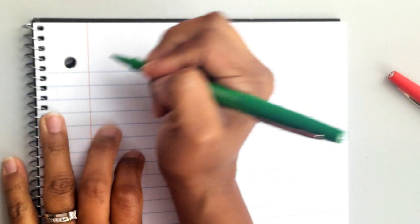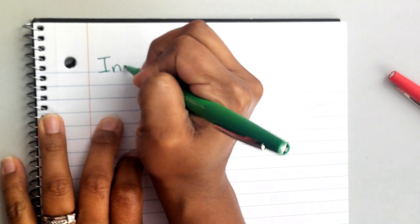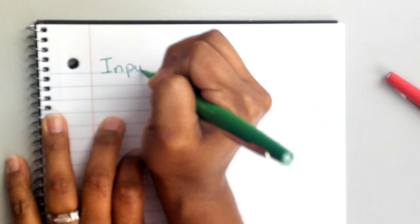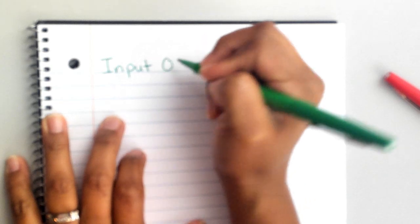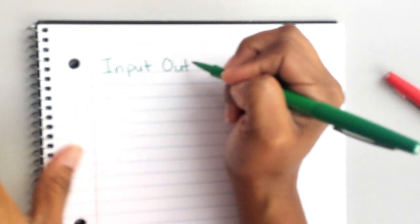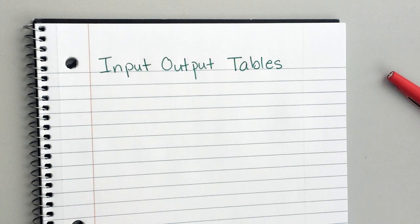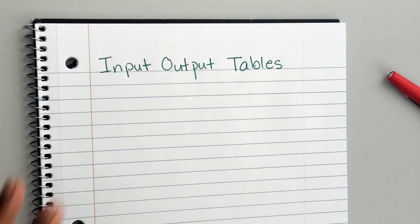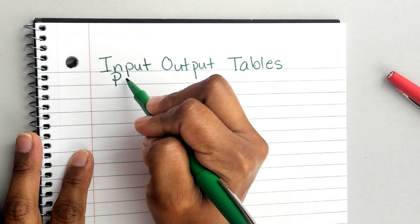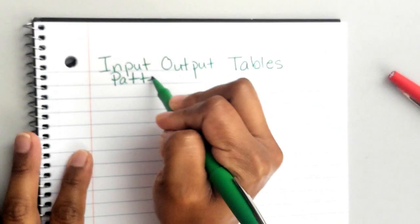Number pairs are also called input output tables. Pause if you need to fast forward or rewind — this is at your own pace. The title is input output tables, and they're also known as pattern relationship tables, because really what it is is trying to figure out what's the pattern.